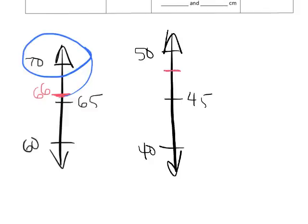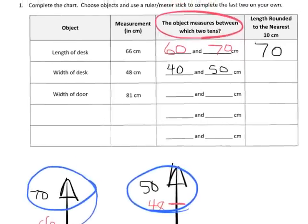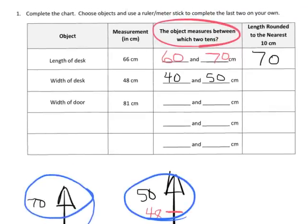We know smack dab in the middle is 45, and we're being asked to label 48. We know 48 is going to be somewhere up here, and that makes the rounding to the nearest 10 would be it would round to 50. So that means 50 is going to go right here.